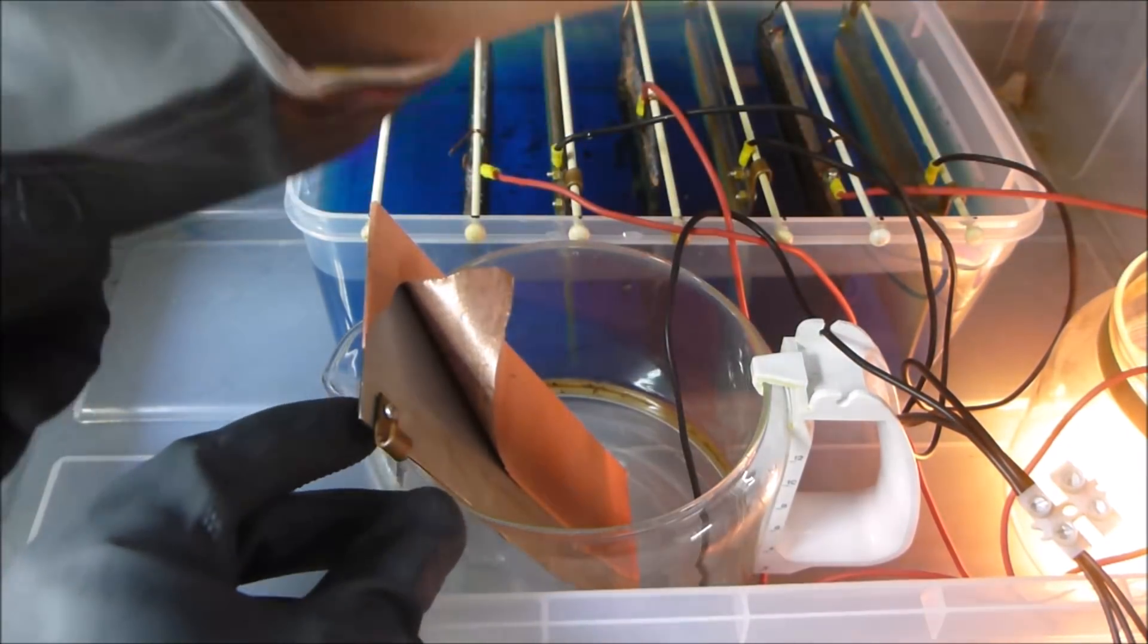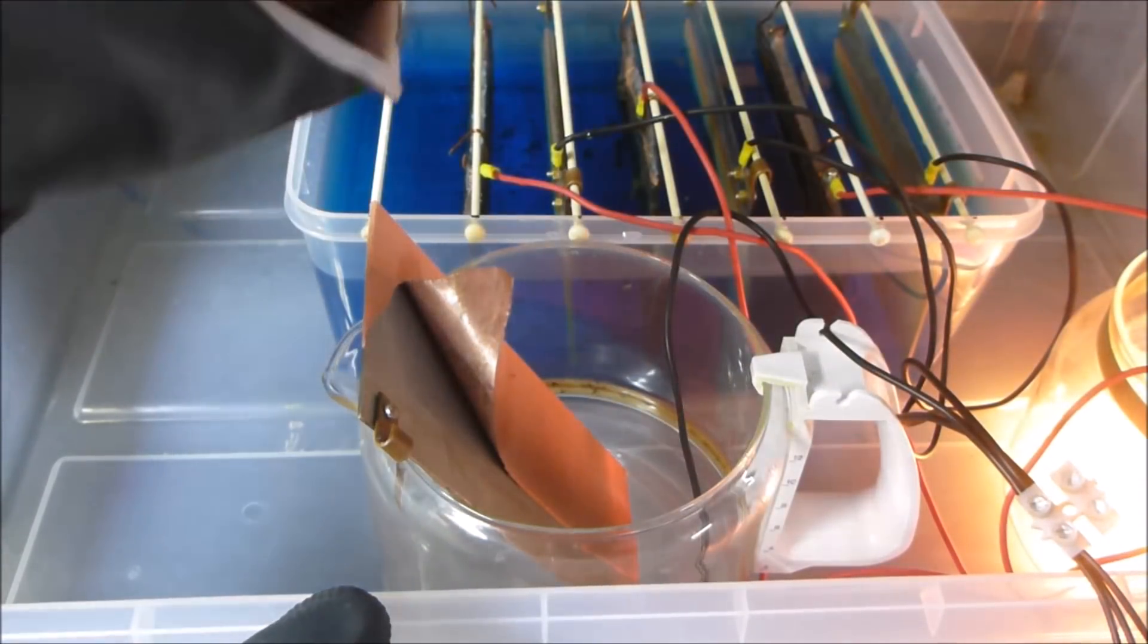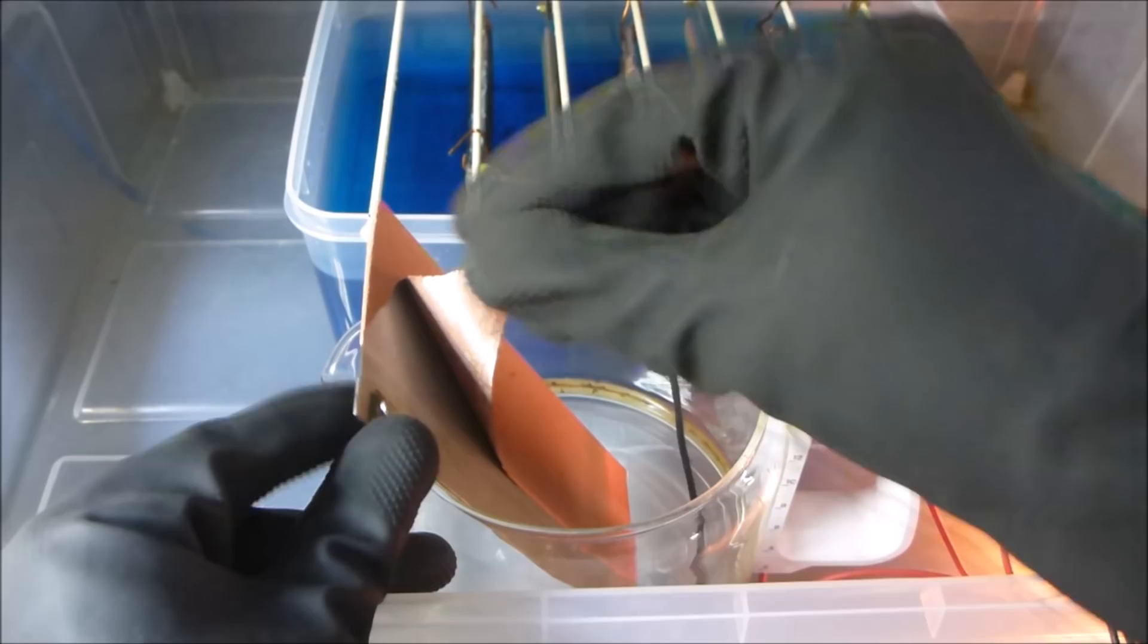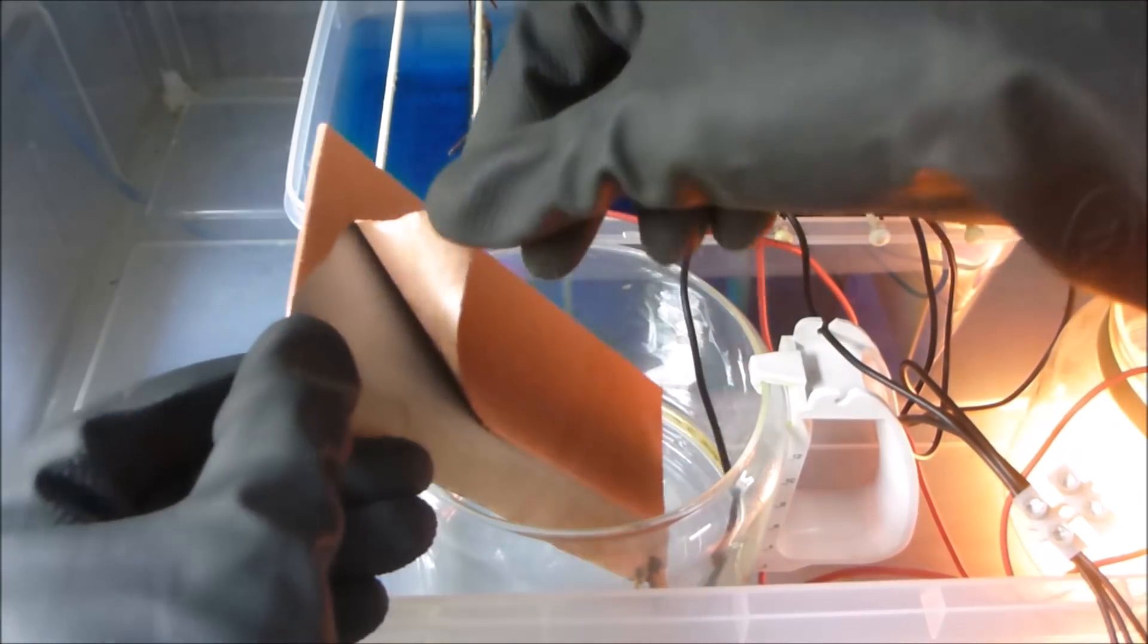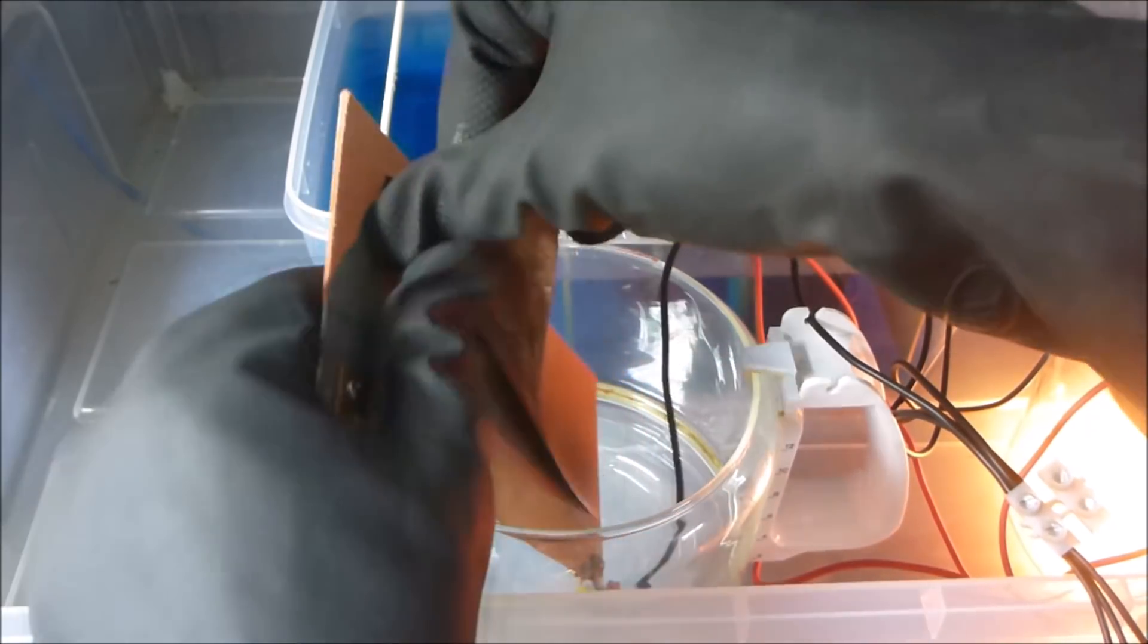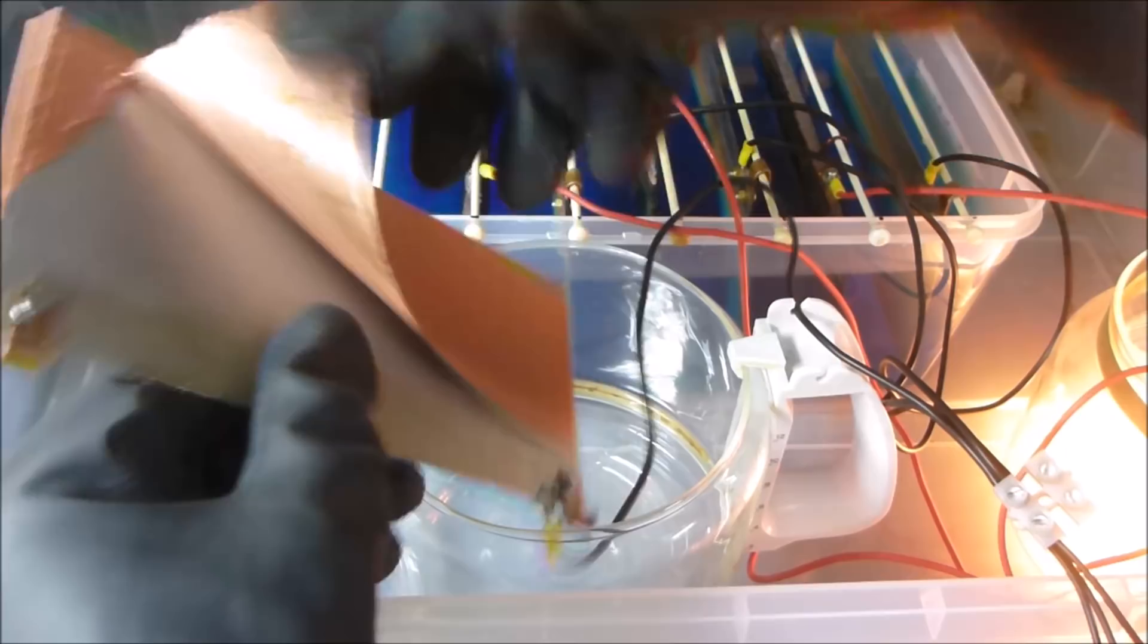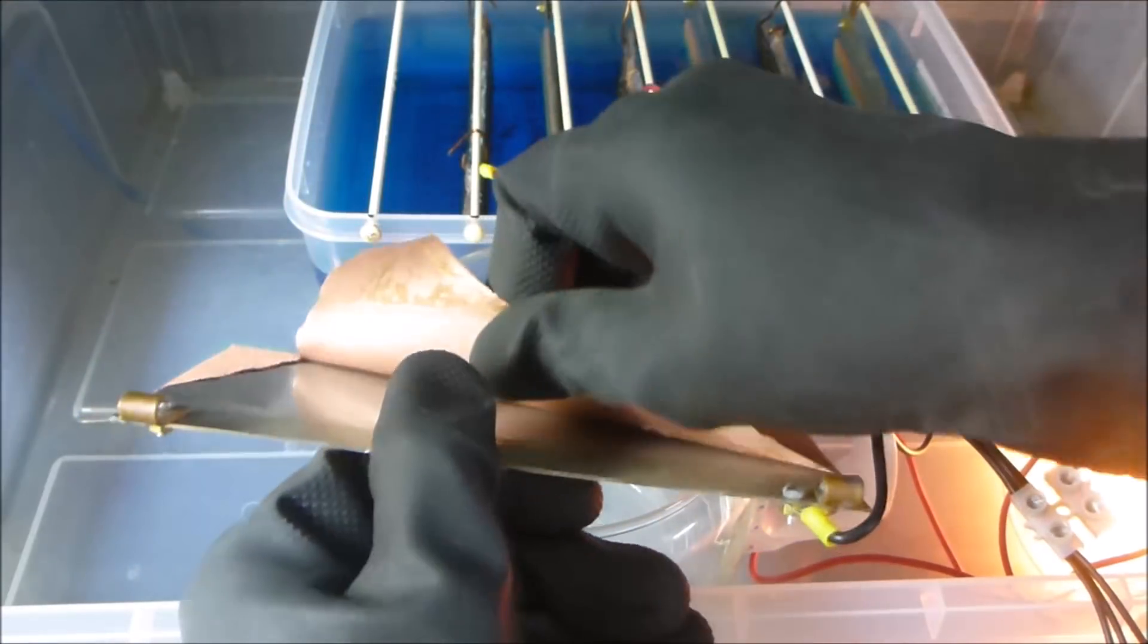So what I did is I took one of the stainless steel plates and just used a little sharp blade to make a little cut to get the copper started. And the copper is actually peeling off in a sheet like this. It's just absolutely incredible how well stuck the copper is, how well plated together it is. And look how smooth it is on that side.